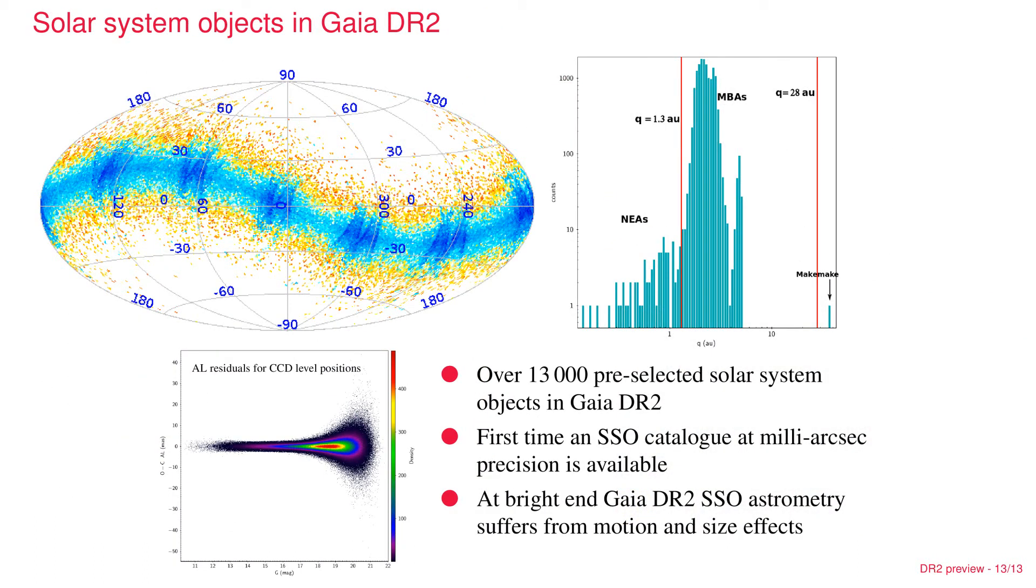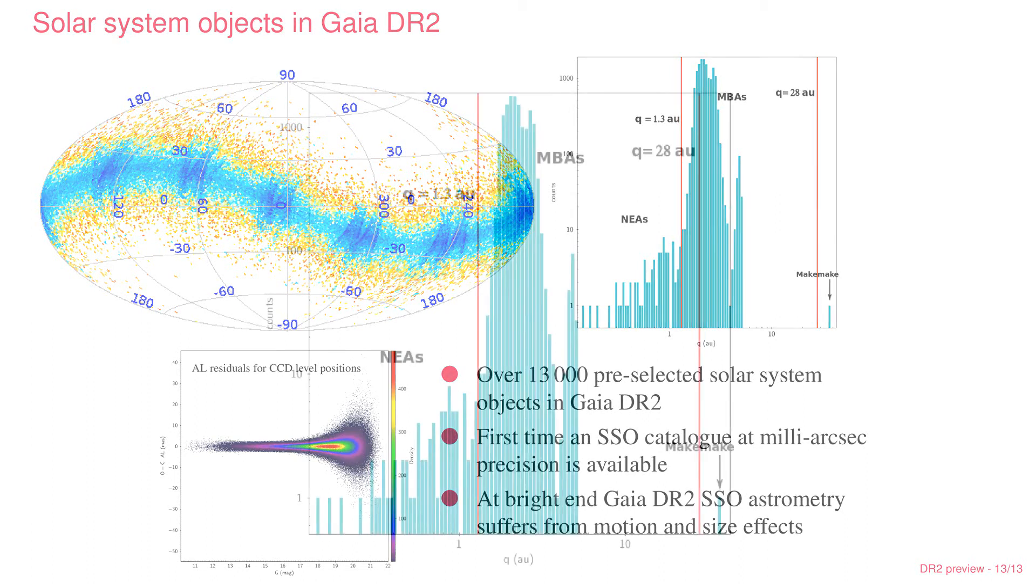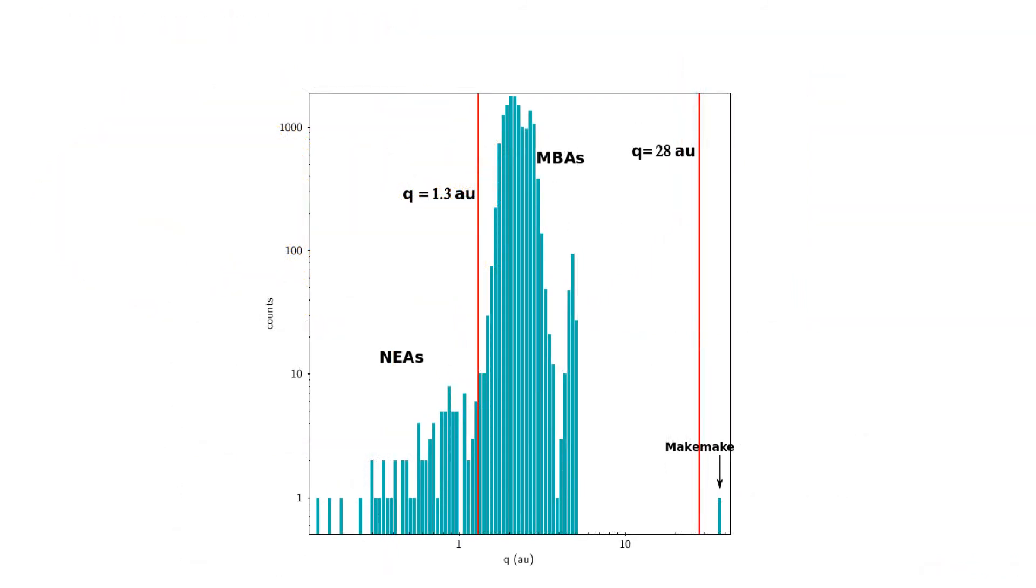On slide 13, we get to the solar system objects. As I said before, this is the best survey ever in the optical for solar system object astrometry. You see on the top right a diagram that shows a histogram of the number of solar system objects observed as a function of the semi-major axis of their orbit. Most of the asteroids observed are in the main belt, that's the central peak. But we also observe quite a few near-Earth asteroids, very interesting because of the hazards that they potentially pose. There is one Kuiper belt object, Makemake, all the way over on the right in this diagram.